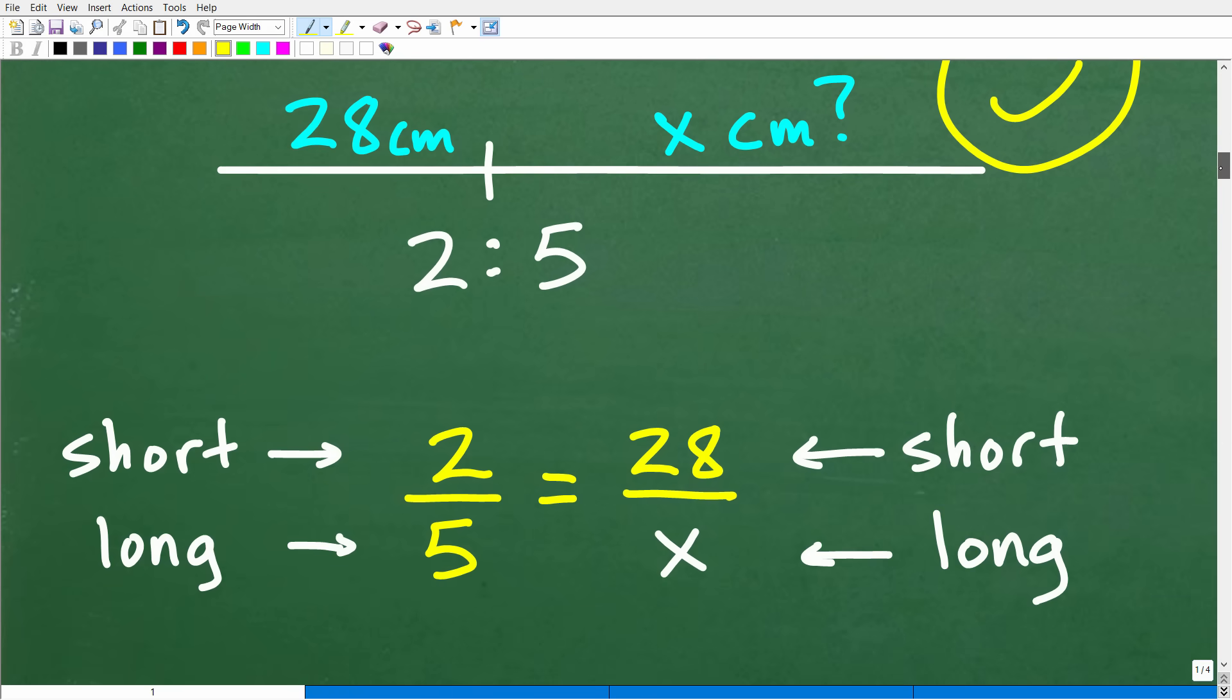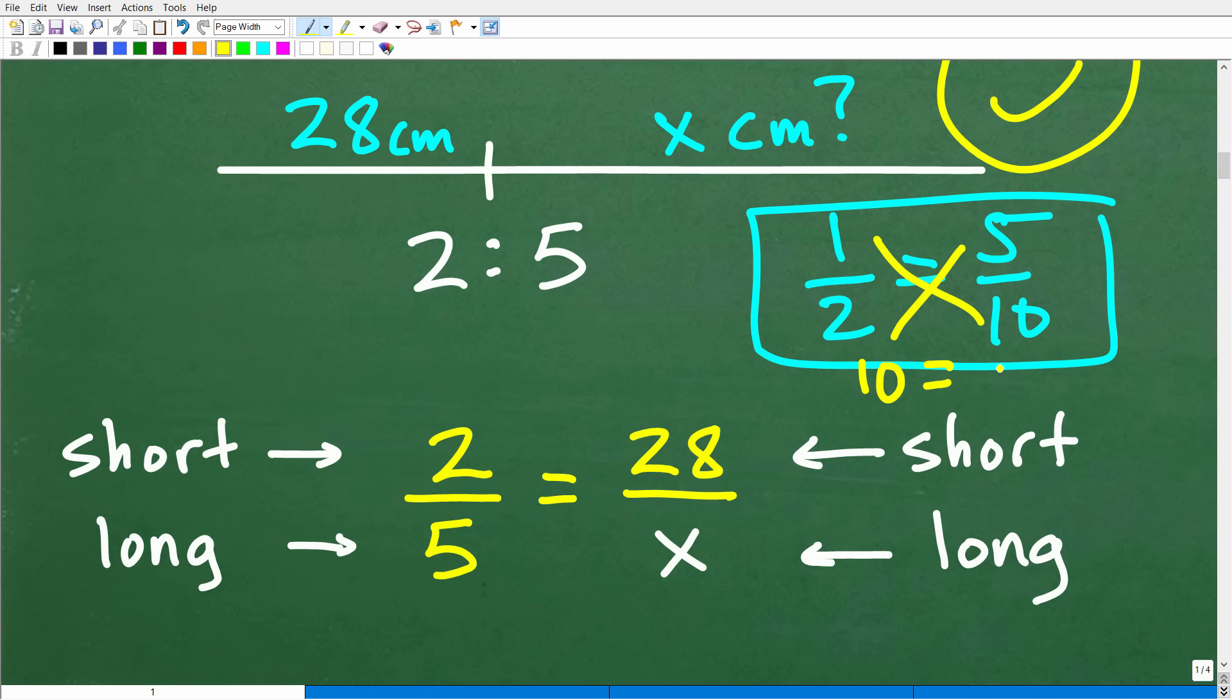Okay, so a proportion is nothing more than two equal fractions. Okay, so for example, if I have a fraction one half and let's just think of another fraction that's equal to one half, how about like, say, five over ten? So this is a proportion. So it's nothing more than two equal fractions. And when you have two equal fractions, we have something called the cross product. And that means if you cross multiply like this, one times ten is ten and two times five is ten as well. So when you have two equal fractions, i.e. a proportion, the cross product is true. And we need to understand this property of proportions to solve proportion problems.